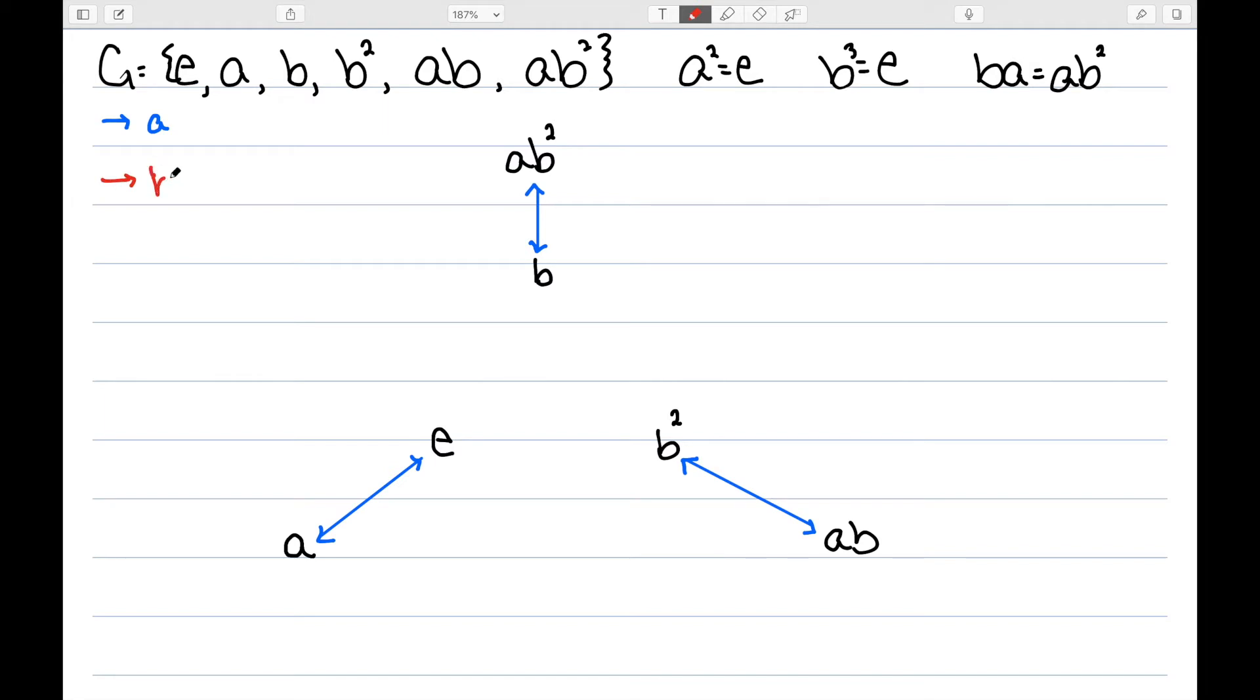I'm now going to do another color. I'm going to do red for B. E times B is B. B times B is B squared. B squared times B is B cubed or E. A times B is AB. AB times B is AB squared. AB squared times B would be AB cubed or A. So this here is my Cayley diagram. And when you're first doing these, it might be kind of complicated to figure out exactly where to put the group elements to make the pictures look nice, but that's something that we do with practice.